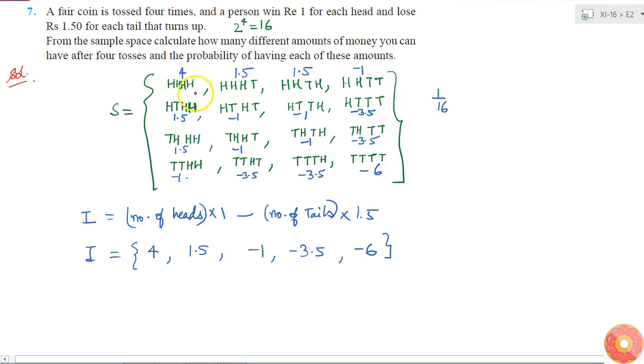Here I know that probability of occurrence of any one of these 16 outcomes is 1 by 16. So probability of getting an income of 4 is simply the number of outcomes in which I am getting income as 4 rupees multiplied by 1 by 16. It is only in one element, so the probability of getting 4 rupees is 1 by 16.